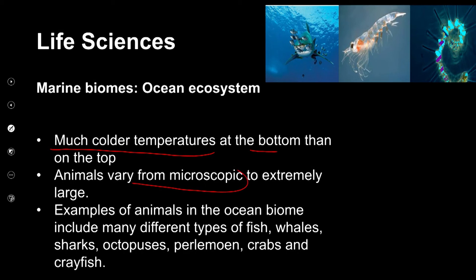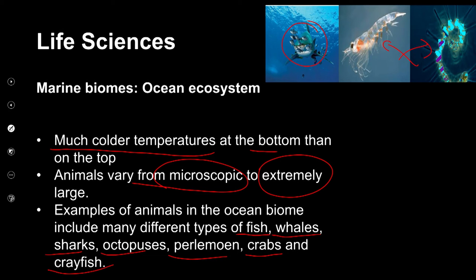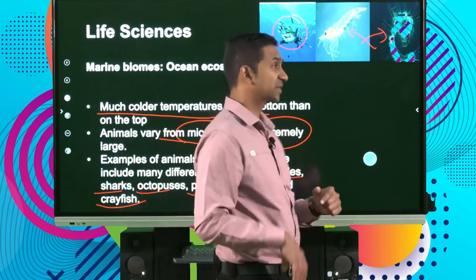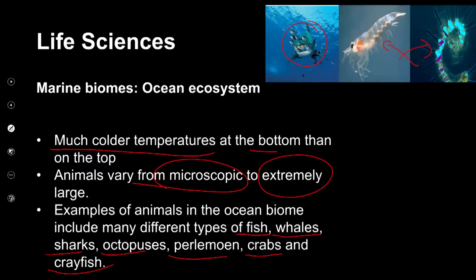Animals in ocean ecosystems vary from microscopic zooplankton and phytoplankton to extremely large organisms like sharks and whales. Examples include different types of fish, whales, sharks, octopuses, perlemoen, crabs, and crayfish. The deep ocean ecosystems are the best place to see the diversity of life forms.